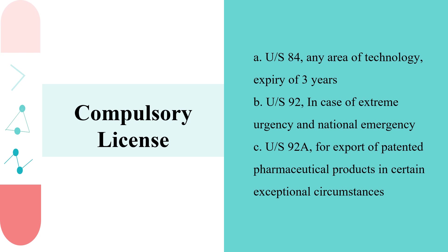Compulsory license in India is granted under three circumstances. Under Section 84, if three years' time has expired after a patent is granted and the patent holder himself fails to work on the invention — because of which the reasonable requirements of the public are not met, or the product is not available to the public at an affordable price, or the invention is not worked in the territory of India — any company can request the Controller to grant a compulsory license.